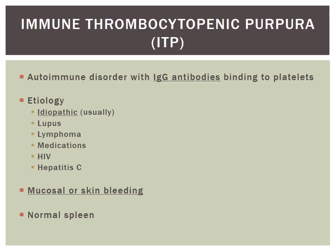Immune thrombocytopenic purpura (ITP) is an autoimmune disorder caused by IgG antibodies binding to platelets, leading to increased platelet destruction. Often idiopathic, it can also be seen with lupus, lymphoma, medications, HIV, or hepatitis. Most patients present with mucosal or skin bleeding — most commonly epistaxis, petechiae, purpura, or ecchymosis. Patients with ITP will often have a normal spleen; if splenomegaly is present, you should consider malignancy.